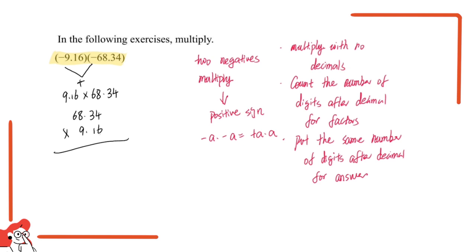We have 4 times 6 is 24; 4 times 1 is 4; 3 times 6 is 18 plus 2 is 20; 6 times 8 is 48 plus 2 is 50; 6 times 6 is 36 plus 5 is 41. Then 1 times 4, 1 times 3, 1 times 8, 1 times 6. Then 9 times 4 is 36; 9 times 3 is 27 plus 3 is 30; 9 times 8 is 72 plus 3 is 75; 9 times 6 is 54 plus 7 is 61.